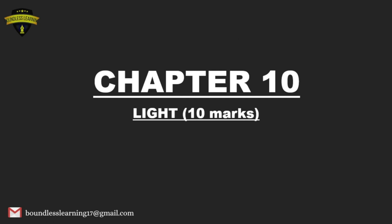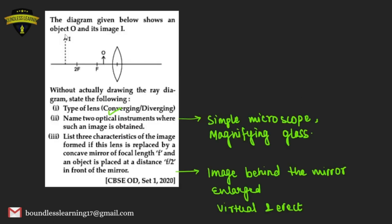The first chapter is Light. The first question shows an object O and its image I. This is a convex lens and the object is kept between the optical center and focus. The image would be formed beyond 2f on the same side of the lens and would be virtual. This is a converging lens. It is used in a simple microscope as well as magnifying glasses or hand lenses.